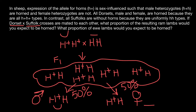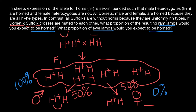Let's read our questions again. The first question: what proportion of the resulting ram lambs would you expect to be horned? According to our problem, 100% of the ram lambs are going to be horned. The second question: what proportion of the ewe lambs would you expect to be horned? The ewe lambs are going to be without horns, so zero percent are going to be horned.